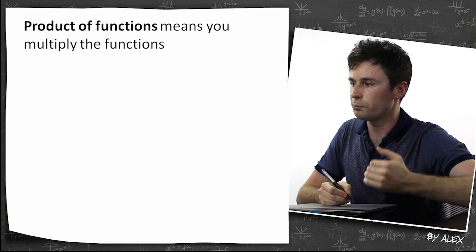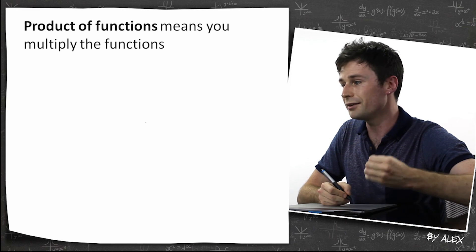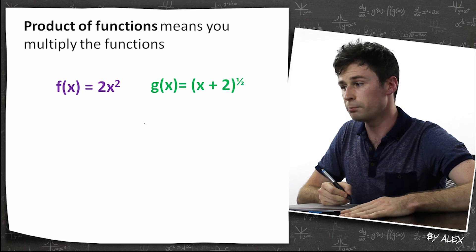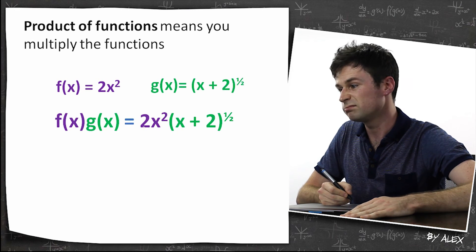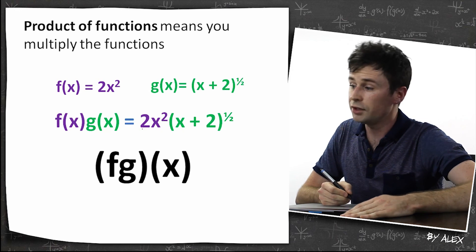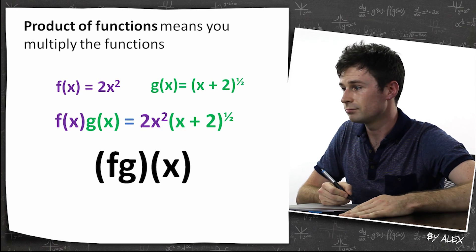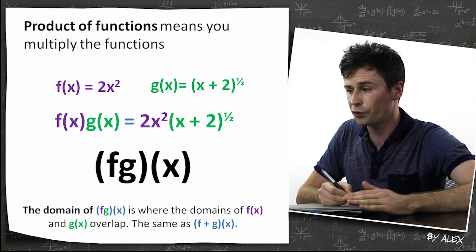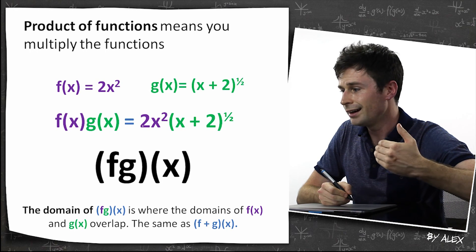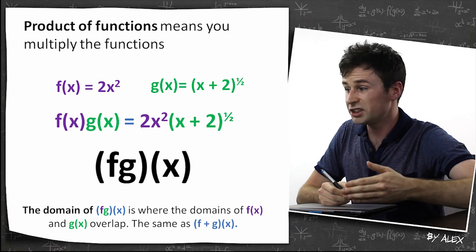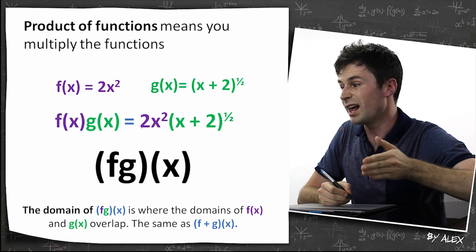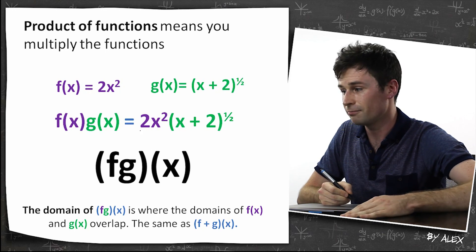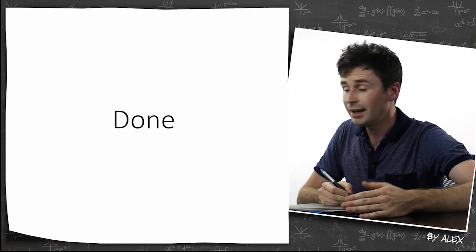The product of functions means you multiply the functions. We've got the same two functions, and all you do now is multiply them together. This is called fg of x. When it comes to domains, it's the same deal as the sum — you just find where both domains overlap, and that's the domain of fg of x.